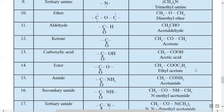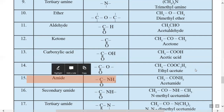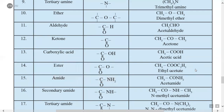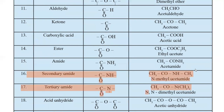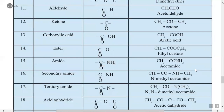The fifteenth type is amide. Amide has the functional group -CONH2, a combination of the ketone functional group and primary amine (NH2). Example: CH3CONH2 is acetamide. The sixteenth type is secondary amide with functional group -CONH-; example CH3CONHCH3 is N-methyl acetamide. Tertiary amide has -CON- functional group; CH3CON(CH3)2 is N,N-dimethyl acetamide.